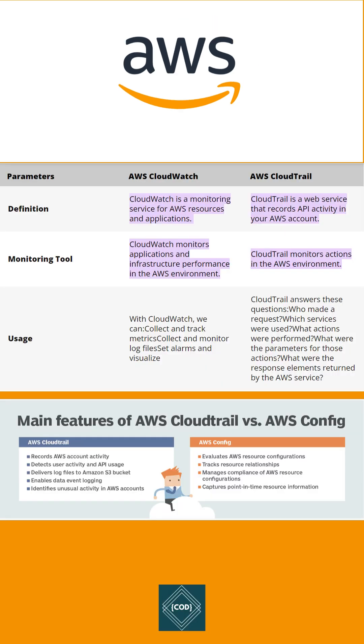First, CloudWatch is a monitoring service for AWS resources and applications. CloudTrail is a web service that records API activity in your AWS account.